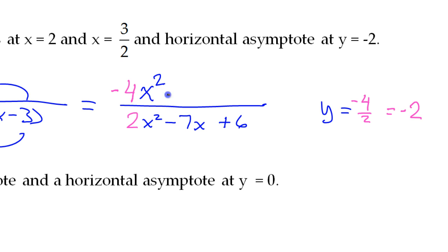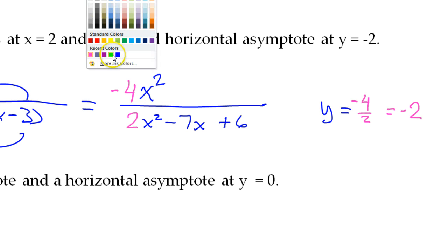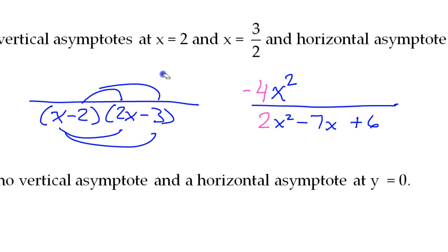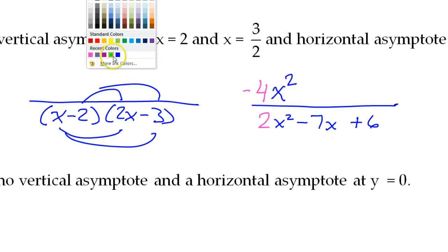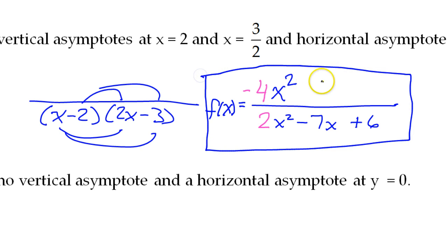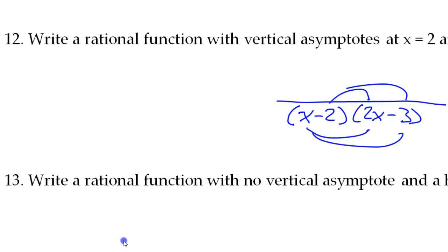So the numerator starts with negative 4x squared. You could add optional additional terms — like x minus 1 — but that green part is optional. For simplicity I'll leave it out. So f(x) equals negative 4x squared divided by (x minus 2)(2x minus 3). That's one valid answer for number 12.